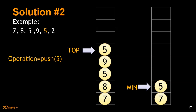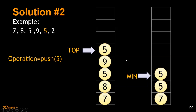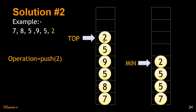Next element is 5 again. Since 5 is equal to 5, we push it in the min stack as well. Whenever there are duplicate minimums, we have to keep track of all of them. Now let's start popping out elements from the main stack. When popping, we compare the top element with the top of the minimum stack — if they are equal, we remove the top of the minimum stack too.